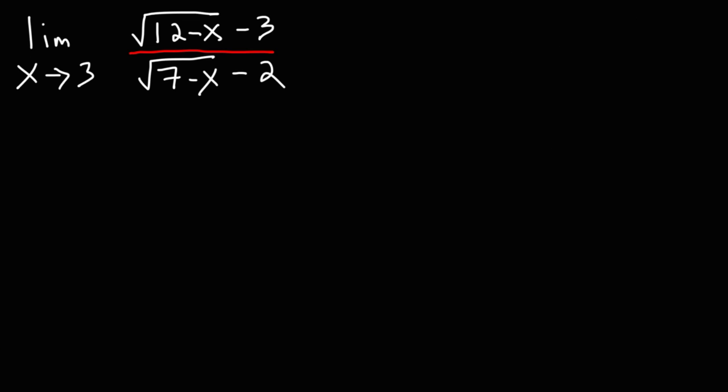When you want to evaluate a limit that has radicals and fractions, what you want to do is multiply the top and the bottom by the conjugate of that radical. The conjugate of the square root of 7 minus x, minus 2, is going to be the square root of 7 minus x, plus 2.